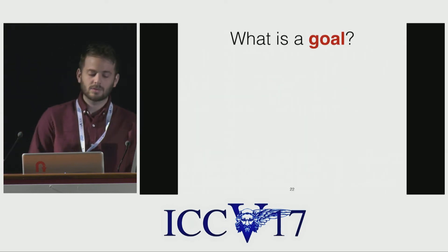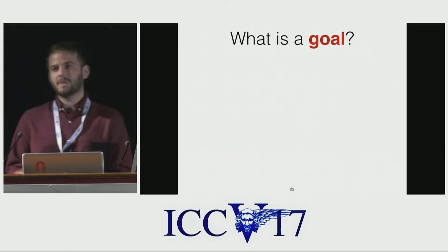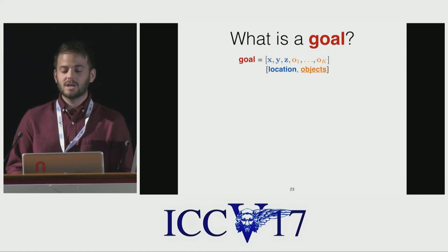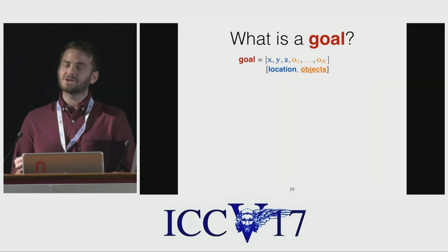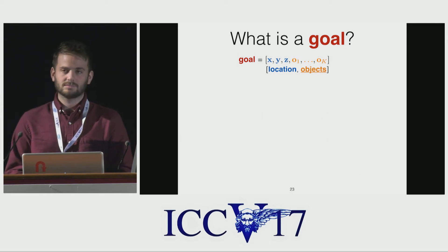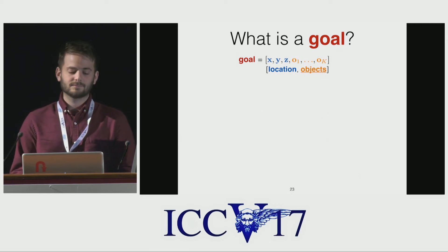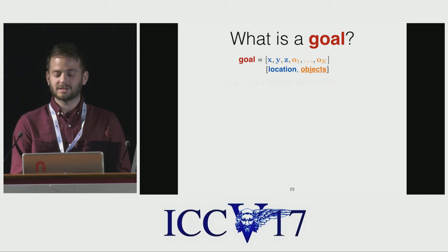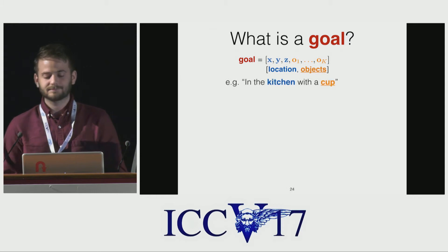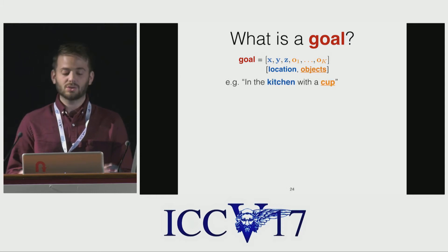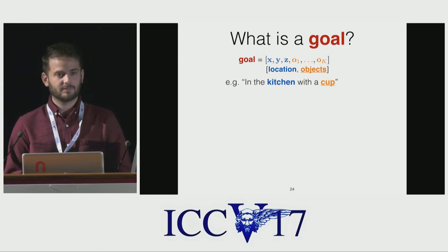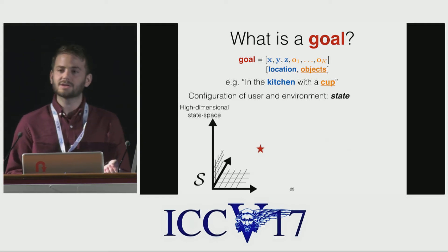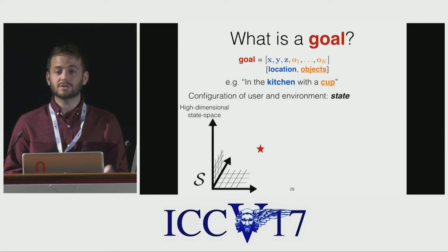What is a goal? There are many possible definitions, but in ours, a goal consists of a 3D location as well as information about what objects a person holds. In our previous example, the person started in the office and took the cup to the kitchen. Their goal was to be in the kitchen with a cup — a specific joint configuration of the user and the environment.